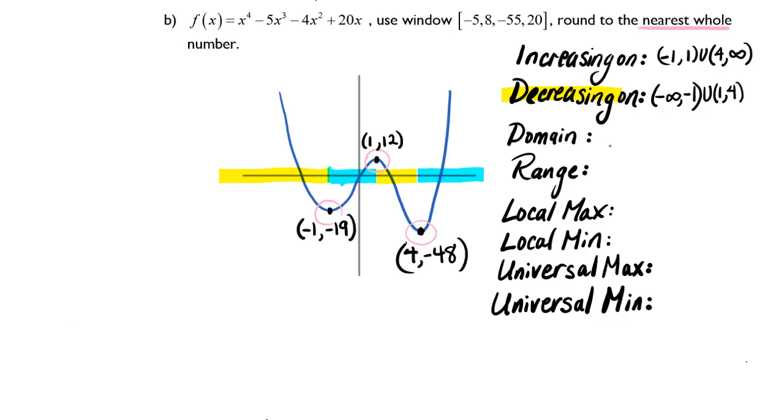My domain is from negative infinity to infinity because there are no restrictions on this domain. There are no fractions in the denominator with variables in the denominator, and there are no radicals. The range will be from the very lowest point that the graph exists, which is at negative 48, and we include that endpoint, all the way to positive infinity because you can assume that this graph continues upwards on both sides.